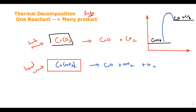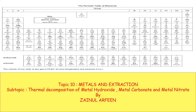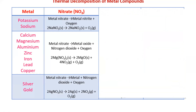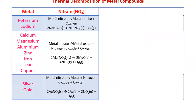Now let's look at the thermal decomposition of nitrates, carbonates, and hydroxides. For metal nitrates, the product depends on the reactivity series. If you have potassium nitrate or sodium nitrate and supply heat, the metal nitrate produces metal nitrite plus oxygen.